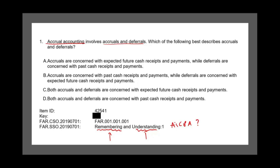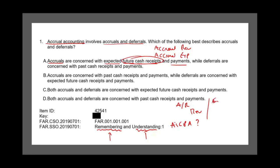Let's take a look at answer A: accruals are concerned with expected future cash receipts and payments. Is this true? Yes. We have accrued revenues and accrued expenses. For accrued revenue, we debit accounts receivable and credit revenue — that deals with future cash receipts. For accrued expenses, we debit an expense and credit a payable — that deals with future cash payments. This fits the definition.